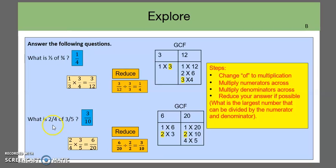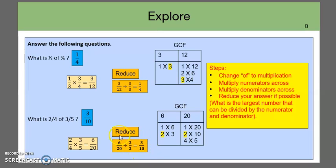We do the same thing with the second example: two-thirds of three-fourths. We change of to multiplication, then multiply: two times three equals six, and three times four equals twelve — wait, four times five equals twenty. We multiply numerators across and denominators across, then find the GCF. The factors of six are: one times six, two times three. The factors of twenty are: one times twenty, two times ten, four times five. The largest shared number is two. So we divide: six divided by two is three, twenty divided by two is ten. Our final reduced answer is three-tenths.